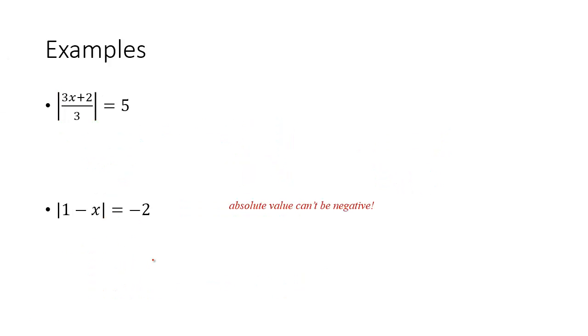Let's try a couple other examples. You've got absolute value here. It's on its own. It's isolated. So either 3x plus 2 over 3 is equal to 5, or 3x plus 2 over 3 is equal to negative 5. So go ahead and solve those two equations and see what you get.